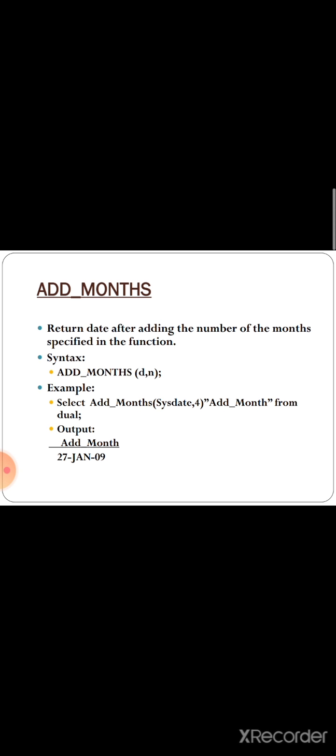For ADD_MONTHS, there will be a given date, and the specified number of months will be added to it. The resulting date will be the output of the function. The syntax is ADD_MONTHS(d, n), where d is the given date and n is the number of months to be added to that date. For example: SELECT ADD_MONTHS(SYSDATE, 4). The SYSDATE function takes the current system date, and after adding 4 months, the output is 27 Jan 09.